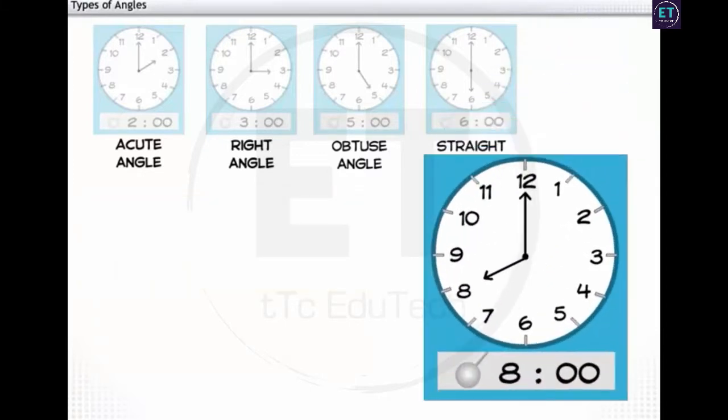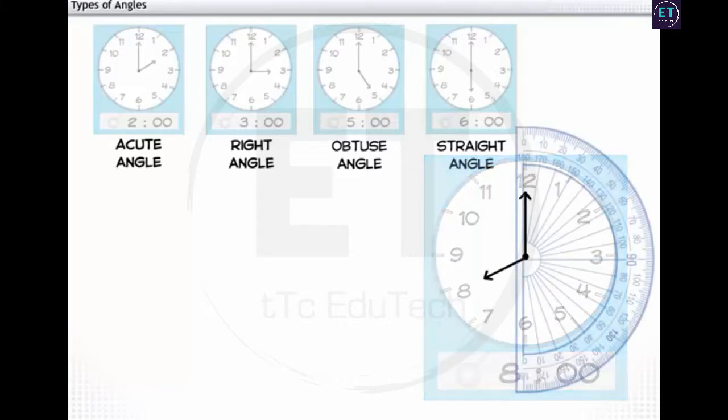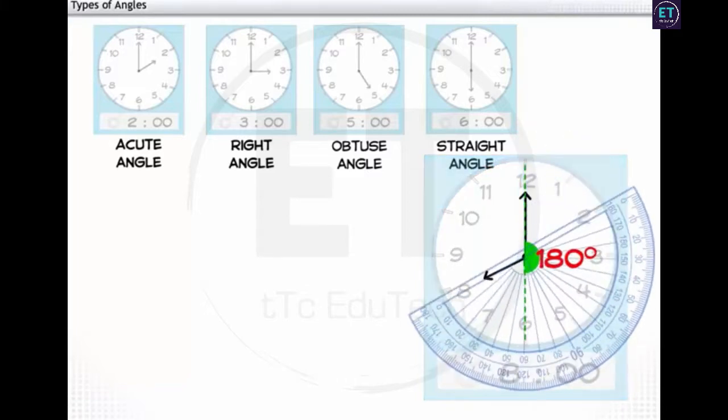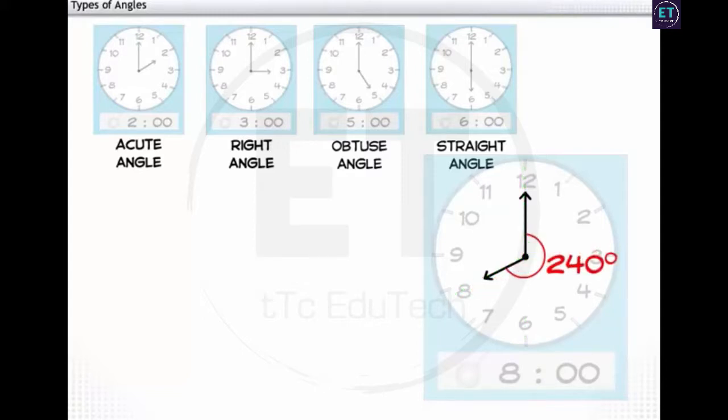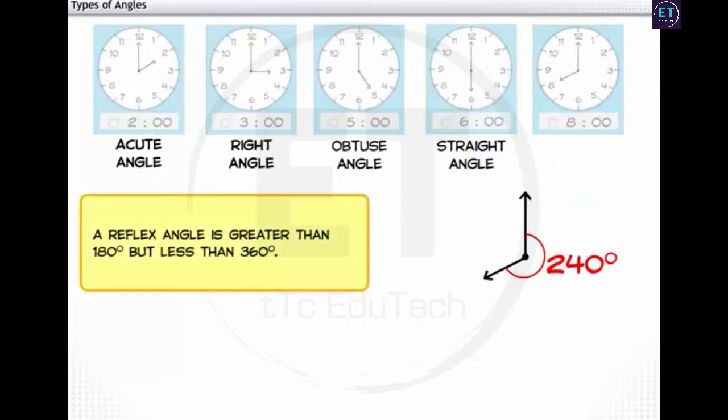Let's measure the angle formed by the rays when it is 8 o'clock. To measure an angle greater than 180 degrees, first take a straight angle and then add the remaining angle to it. Now, when you measure the angles, it is 180 degrees plus 60 degrees, which is 240 degrees. A reflex angle is greater than 180 degrees but less than 360 degrees.